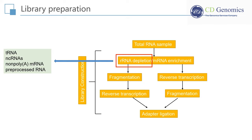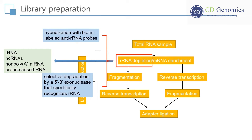There are two popular ribosomal RNA depletion methods. One is the hybridization of ribosomal RNA with biotin-labeled anti-ribosomal RNA probes, followed by removal with streptavidin-coated magnetic beads. The other is the selective degradation of ribosomal RNA by a 5' to 3' exonuclease that specifically recognizes ribosomal RNA with a 5' phosphate. Fragmentation is subsequently conducted to reach the desired length for different NGS technologies. Some small RNAs, such as microRNAs, piwi-interacting RNAs, and short-interfering RNAs, can be directly sequenced without fragmentation.